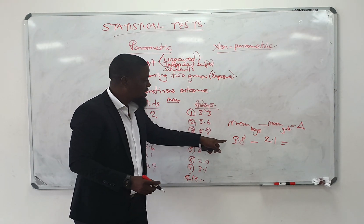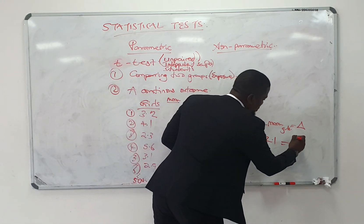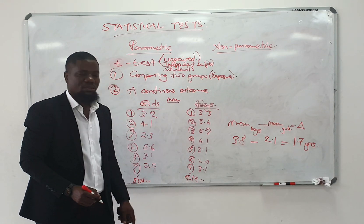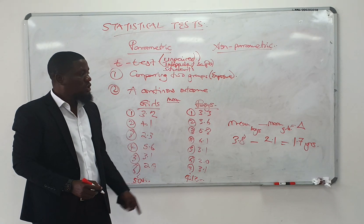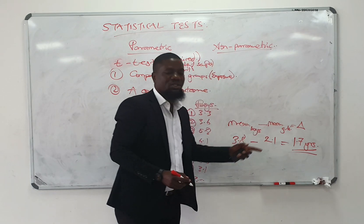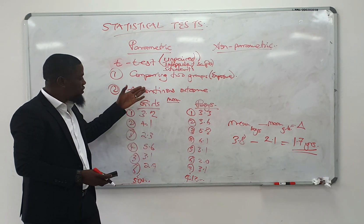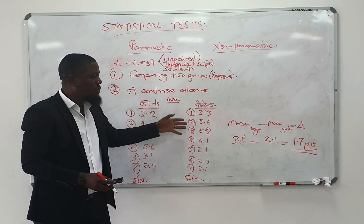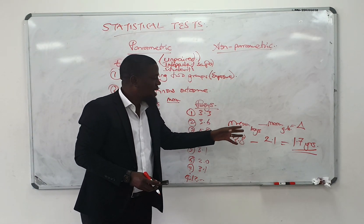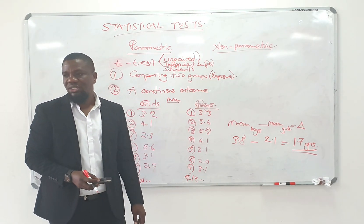You get the difference between the two means — 3.8 minus 2.1 — you get a difference of 1.7. The statistical test is going to observe a difference between the two means of 1.7. We say the mean difference in the age of the girls and the boys as they start school is that the boys start at an age 1.7 years more than the age at which the girls start school.